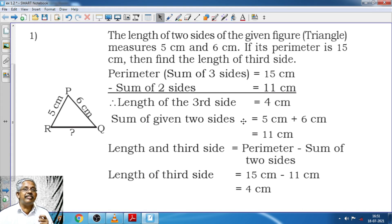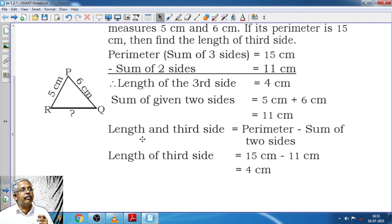But how did we arrive at this decision? Perimeter of the sides are 15 cm and sum of the known sides are 5 cm plus 6 cm which is given over here which is 11 cm. And here we have a formula.